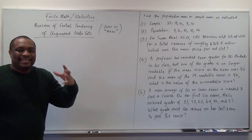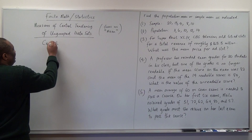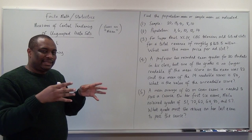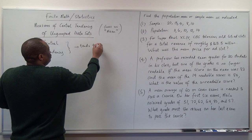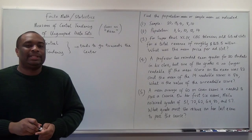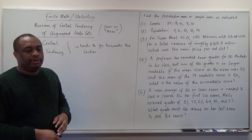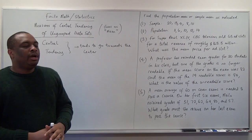So what do we mean by measures of central tendency? If you look at the word 'central,' it tends to go towards the center of the data. Now why are we studying this? By now you should have read chapter one of your book, where we talk about population and sample. When you have a data set, it could be a population or it could be a sample from that population.